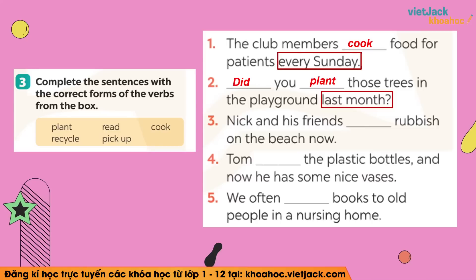Tiếp theo number 3: mình có rubbish (rác) — động từ là pick up. Và keyword là now — các bạn còn nhớ mình sử dụng thì gì không? Thì hiện tại tiếp diễn. Vậy câu số 3 của mình sẽ là: Nick and his friends are picking up rubbish on the beach now — Nick và các bạn của anh ấy đang nhặt rác ở trên bãi biển bây giờ.